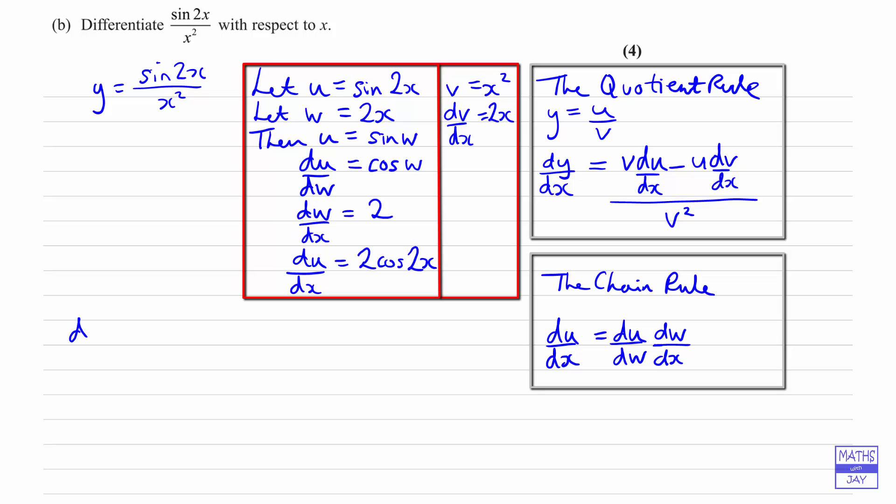We've already said that y is sin 2x over x squared, so we can now just write that dy by dx is going to be v times du by dx first of all, so we've got x squared, and then let's just put in brackets the next bit, so the du by dx is 2 cos 2x.